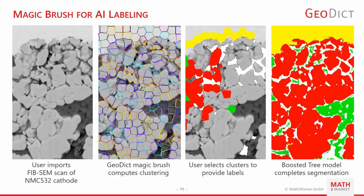Another related feature is the so-called magic brush, which speeds up the labeling process. We import an image of an NMC532 cathode and activate the magic brush function, which pre-computes a clustering as seen in the second image. This accelerates labeling because you can click on individual clusters or islands and they are automatically assigned to the material phase you are currently painting. The boosted tree algorithm then completes the labeling of the image slice based on the provided labels.